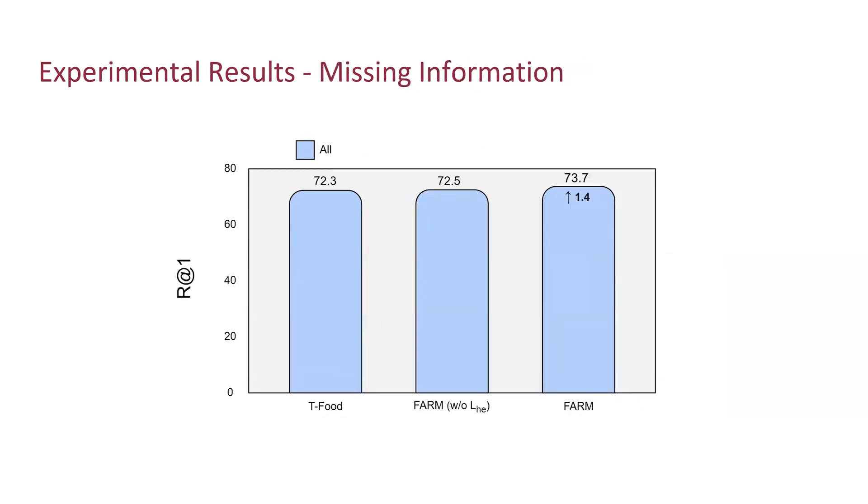To demonstrate the effectiveness of our fine-grained alignment, we did an ablation study when one or more recipe components are missing. We compared it with the best baseline T-food again. Here is the result when all the data is available, and now this is the performance without ingredients. We observed that performance dropped significantly, but FARM has better performance compared to T-food with a huge 15-percent point improvement.